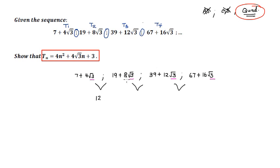For the first difference: 19 − 7 = 12, and 8√3 − 4√3 = 4√3, giving 12 + 4√3. For the next difference: 39 − 19 = 20, and 12√3 − 8√3 = 4√3, giving 20 + 4√3.